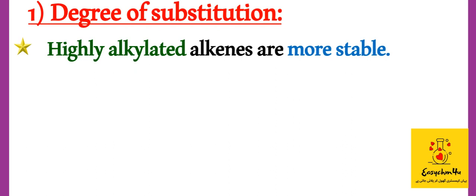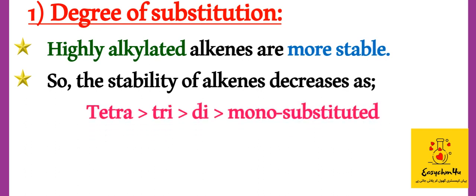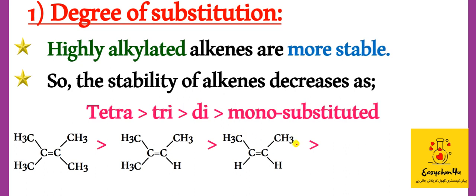Highly alkylated alkenes are more stable. The stability of alkenes decreases in the following order: tetra-alkylated alkenes are the most stable, then tri-alkylated, then di-alkylated, and mono-substituted alkenes are the least stable. You can see that a tetra-alkylated alkene has four alkyl groups — methyl groups — attached to the carbon-carbon double bond. Then tri-alkylated has three alkyl groups, di-alkylated has two, and mono-alkylated has only one. The more substitution, the more stable the alkene.